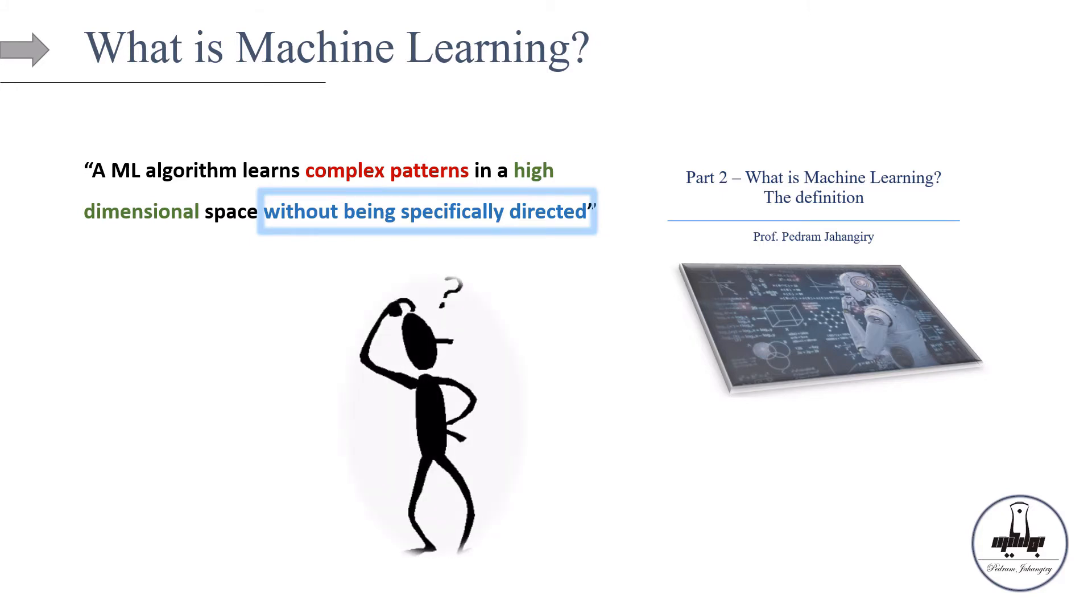This last part, without being directed, does not mean that the computers or the machines will learn the pattern and the data out of nowhere. Actually, this is us, the humans, who set the algorithms, the rules, and after that, the machine is free to play by rules without being specifically directed.